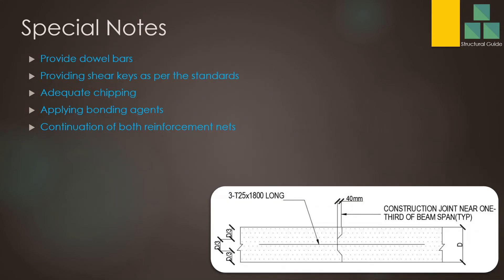Special things we should consider in relation to construction joints: we may provide double bars in the joints. This may not be required for thin elements like thin slabs — we may not provide double bars. But based on the structural engineer's recommendations, sometimes you may have to. Providing shear keys — as per the design requirements — may also be done, because when the construction joint is not properly bonded there may be issues like de-bonding and incapability of transferring bending and shear forces, as I explained previously. To transfer shear, we may provide shear keys.